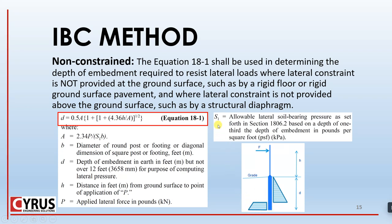To calculate S1 we need the depth, and to calculate the depth we need S1, so this is a trial-and-error operation. We assume a depth for the footing, run the numbers, and see if the calculated depth D is similar to what we assumed. If not, we revise the assumption and run the numbers again until we get close enough to the assumed depth.